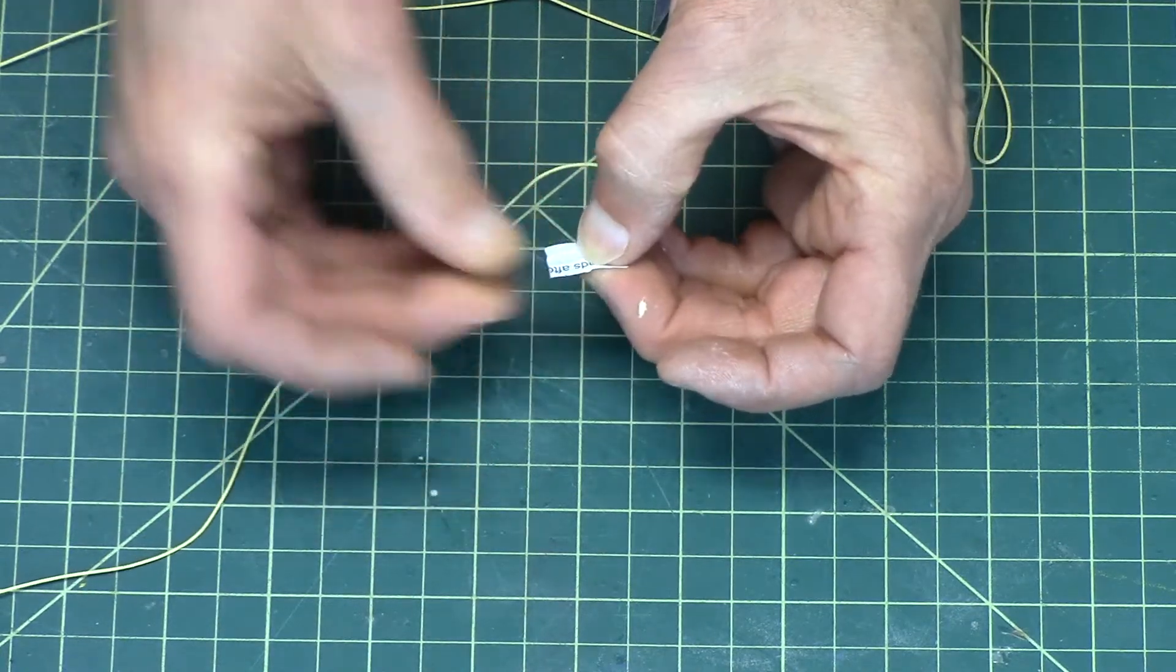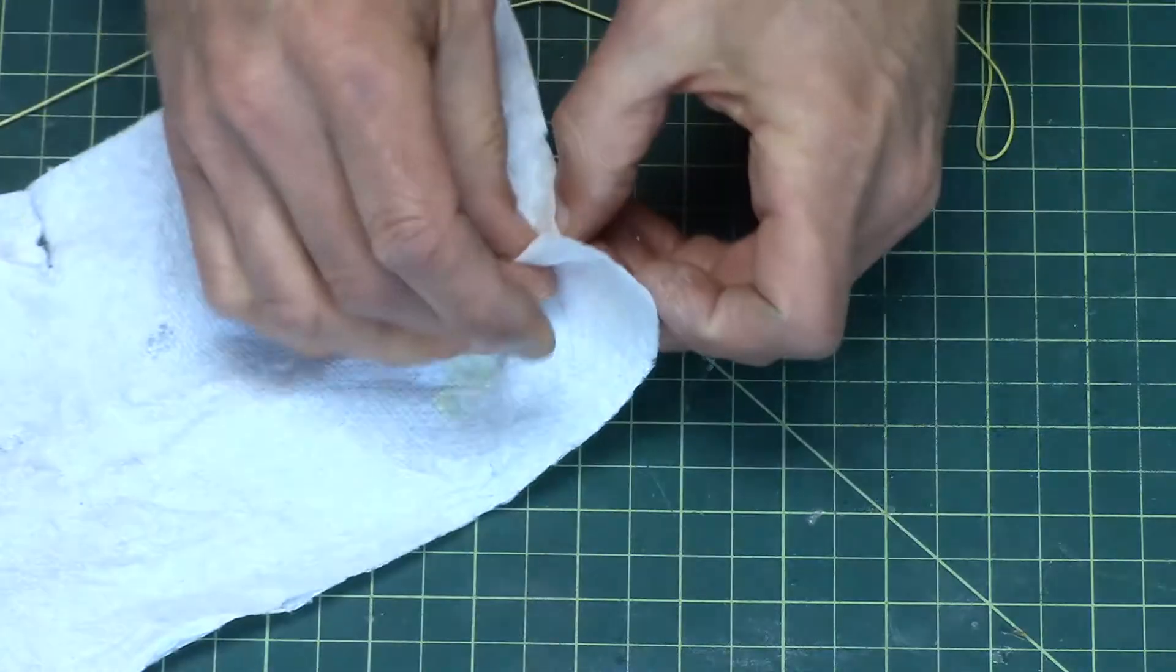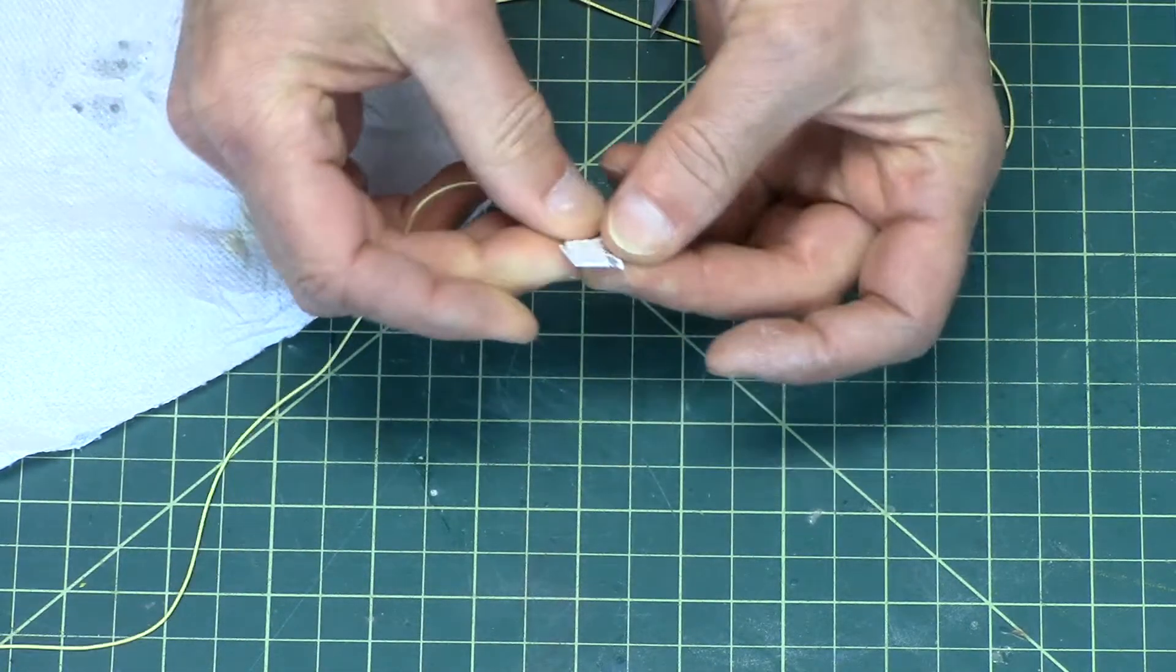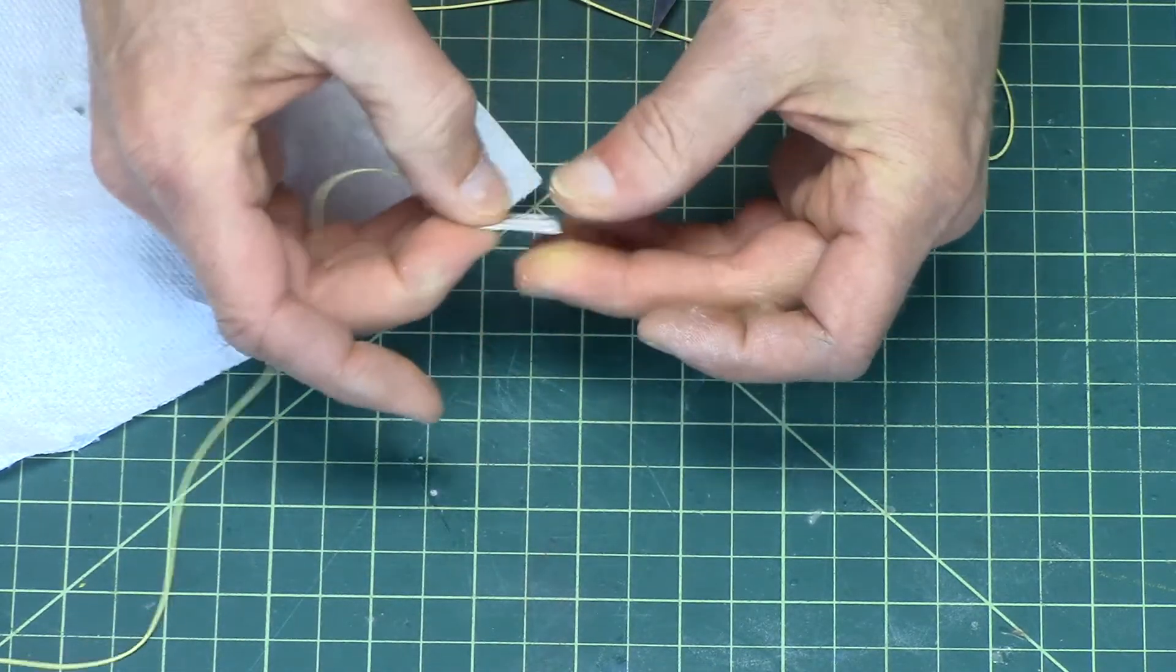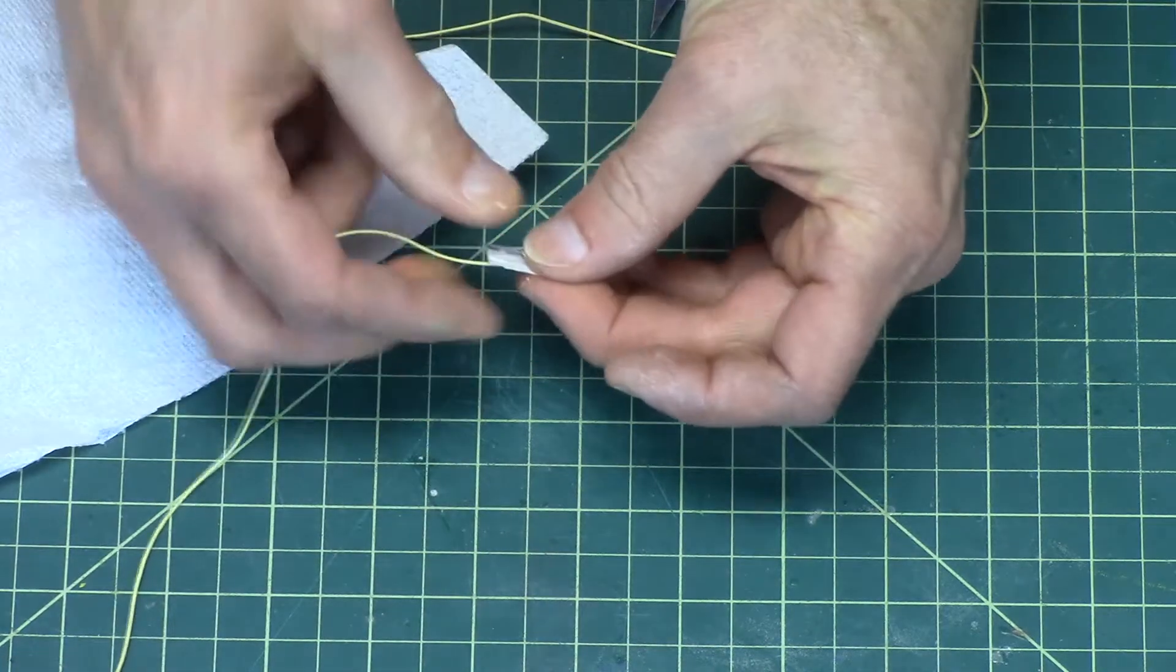Like that, and then squeeze it. You're going to squeeze a little bit of glue out. Always happens. You want to squeeze as much out as you can, because then it will dry faster.